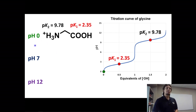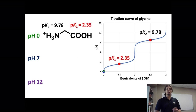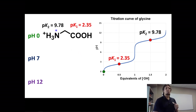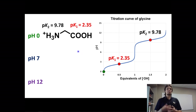If we follow this titration curve and place a dot at pH zero, practically all or a large majority of the molecules are going to have this protonation state: a protonated amine and a protonated carboxylic acid.